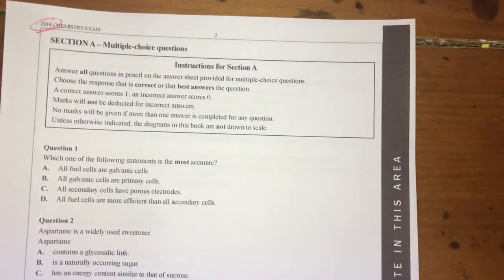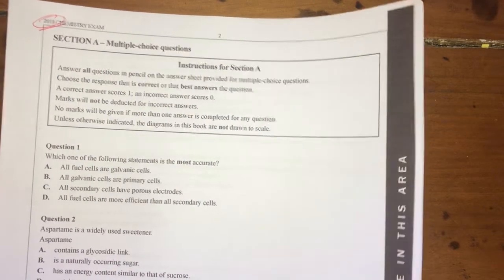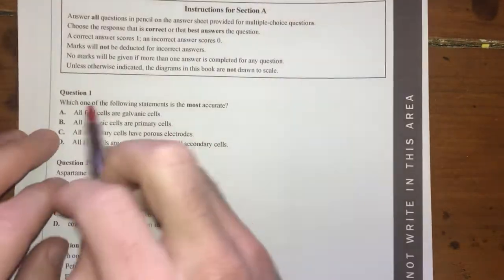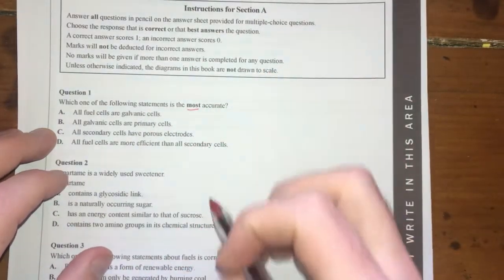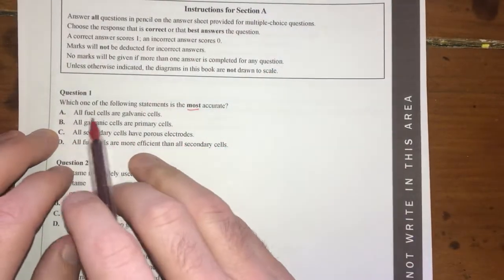2018 VCE exam, starting off with the multiple choice, let's start looking through these. Question one: which of the following statements is most accurate? Let's have a look. All fuel cells are galvanic cells.